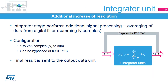The integrator unit performs additional simple averaging of data provided by the digital filter. It sums data coming from the digital filter, with the number of samples to be summed configurable from 1 to 256. The correct configuration must ensure the final data length fits into the 31-bit internal integrator resolution, taking into account the data width coming from the digital filter.